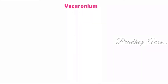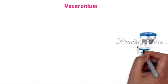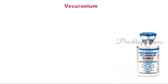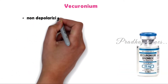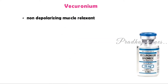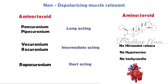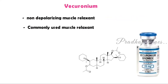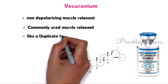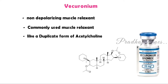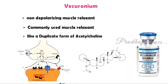Vecuronium is a non-depolarizing muscle relaxant — a commonly used muscle relaxant. It is an intermediate-acting aminosteroid with no histamine release and is cardiovascular stable. In simple words, it is like a duplicate form of acetylcholine. These duplicates look like acetylcholine but don't perform any of its functions.